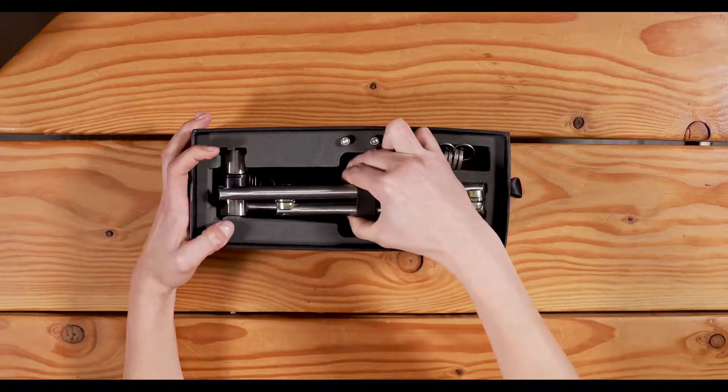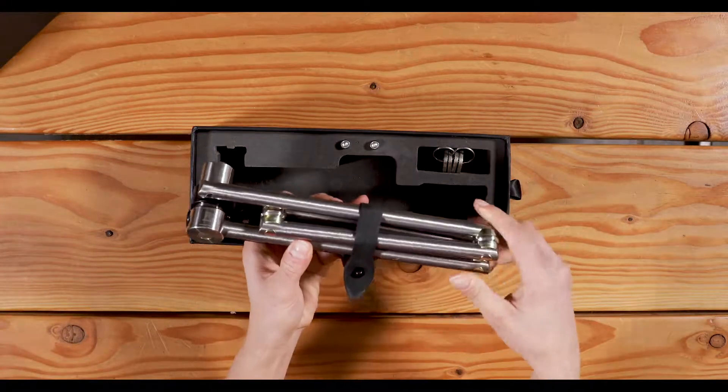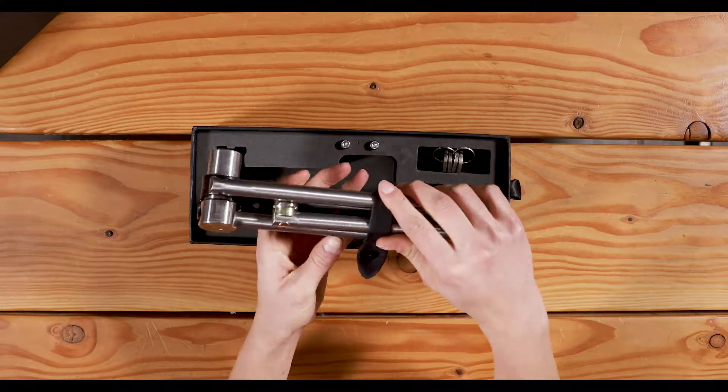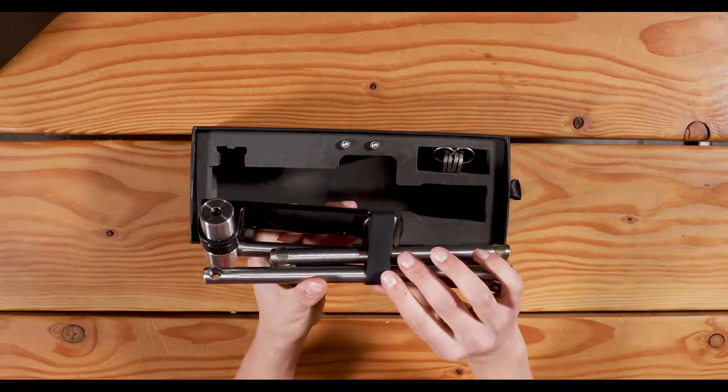When you first get your lock, it will come on the included frame mount. You can attach this mount on your frame with the provided screws.